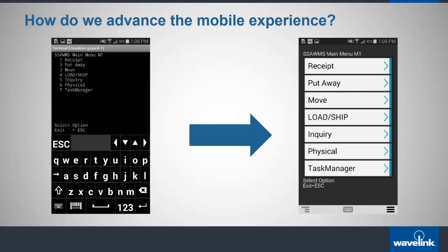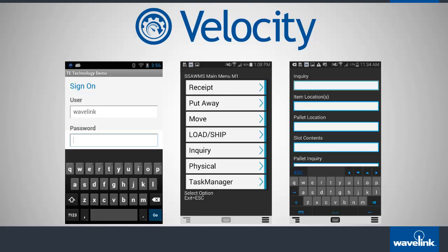Number one was to modernize the interface to make full use of the multi-touch displays in these devices and provide an experience that looks and feels like the mobile applications used on personal devices. Number two was to develop a solution for these devices that are touch-oriented, so the data can be easily entered. And number three, we needed to mitigate the challenges of application migration so that the investment and risk could be controlled, while protecting the investment our customers have made in their existing host systems. And what this has ultimately yielded is our new mobile enterprise application, Velocity.